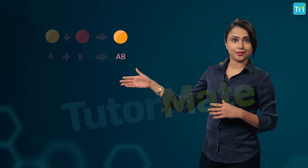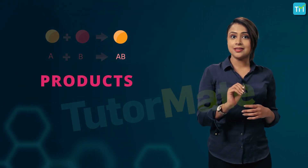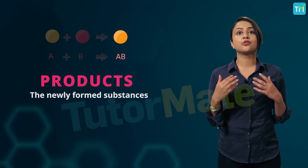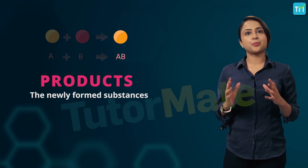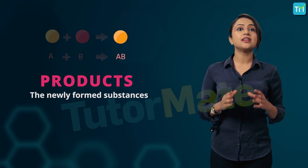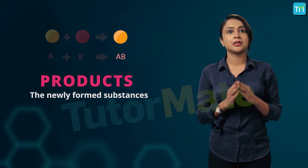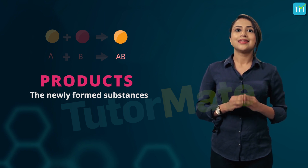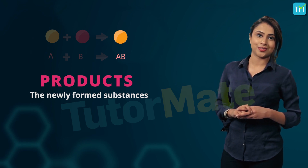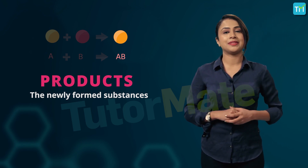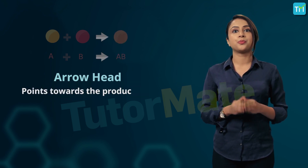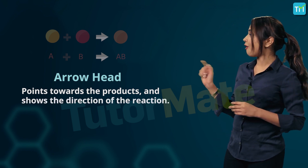On the other end are the products. These are the newly formed substances, or what you obtain as a result from the reaction. Since the products have different chemical compositions than the reactants, we can expect the products to have different physical properties as well. They are always written on the right hand side, or RHS, in an equation with a plus sign between them. The arrowhead in the middle points towards the products and shows the direction of the reaction.